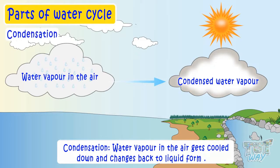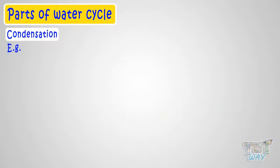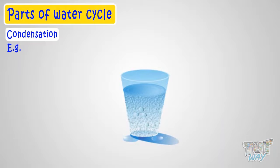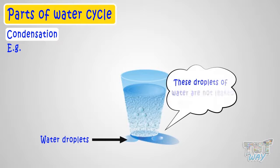Here is a very good example of condensation. A cold glass of water with tiny droplets of water outside it. These droplets of water are not leaked from the glass. So then, where did they come from?